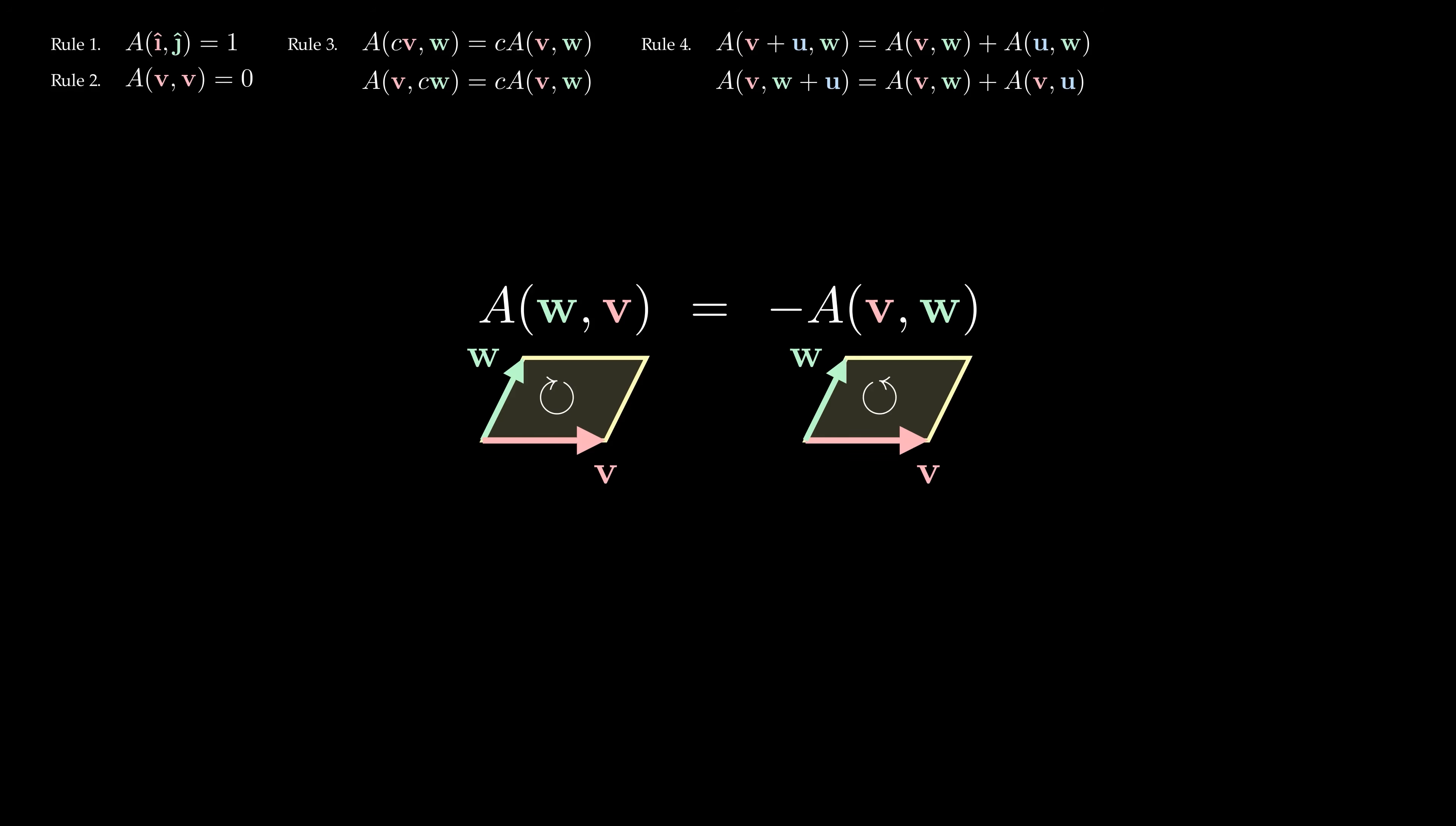It turns out that the sign tracks the orientation of our parallelogram. If going from v to w is a counterclockwise motion, then the area is positive. Otherwise, going from v to w is a clockwise motion, and the area is negative.